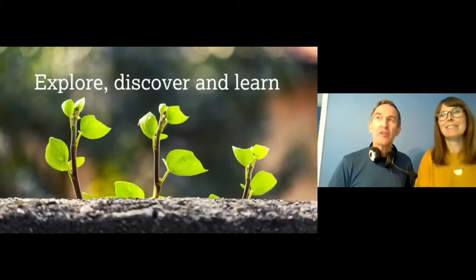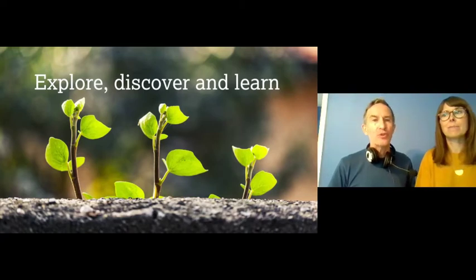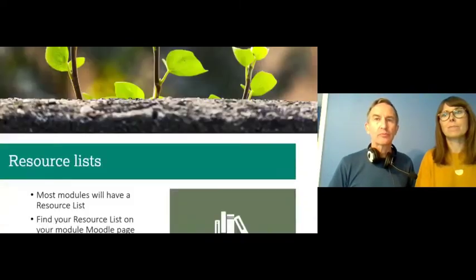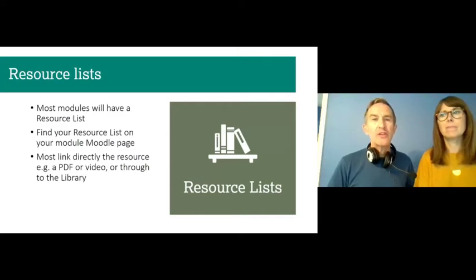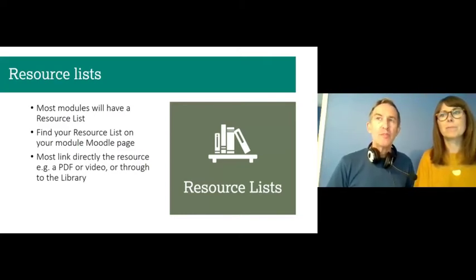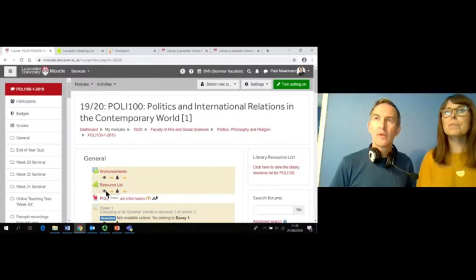Our next theme — Explore, Discover, Learn — looks at the principal ways that you can access our Library resources and materials. Firstly, we have resource lists. Resource lists are electronic reading lists that link you directly to the readings and resources you need for your studies. Most but not all courses will have a resource list which you will be able to access through Moodle. Look out for the Jigsaw icon to find your resource list.